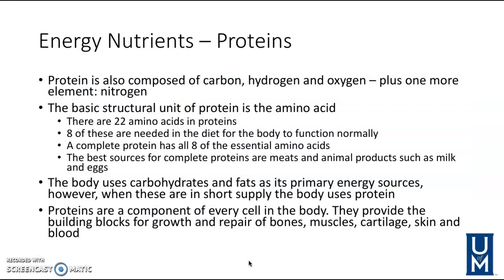The last energy nutrient is protein, which is made up of amino acids. There are 22 amino acids in proteins; eight are essential and must come from the diet for normal body function. A complete protein contains all eight essential amino acids. The best sources of complete proteins are meats and animal products such as milk and eggs, which is why vegetarians and vegans need to carefully monitor their amino acid intake.